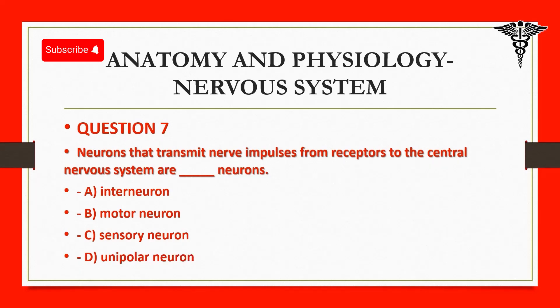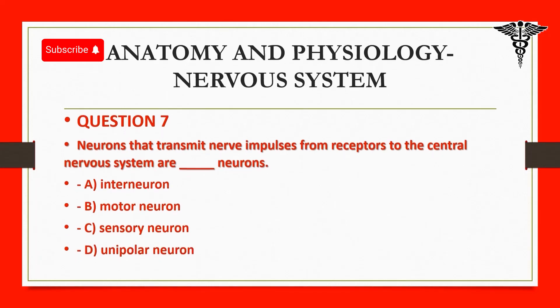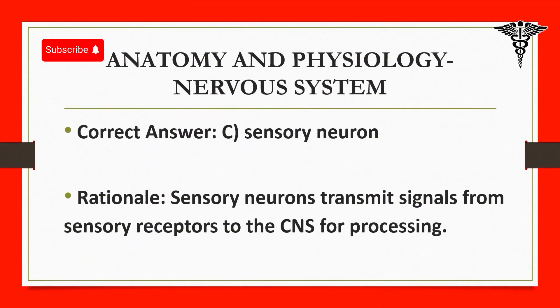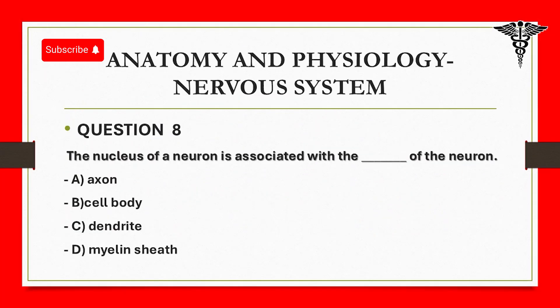Correct answer: C. Sensory neuron. Rationale: Sensory neurons transmit signals from sensory receptors to the CNS for processing.